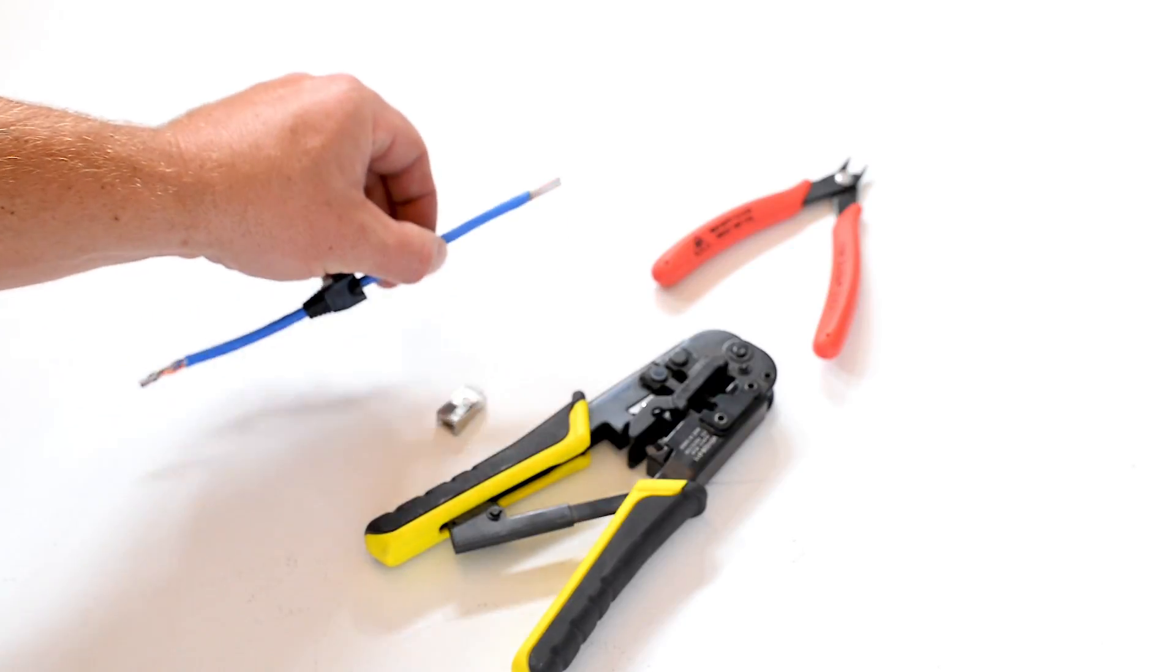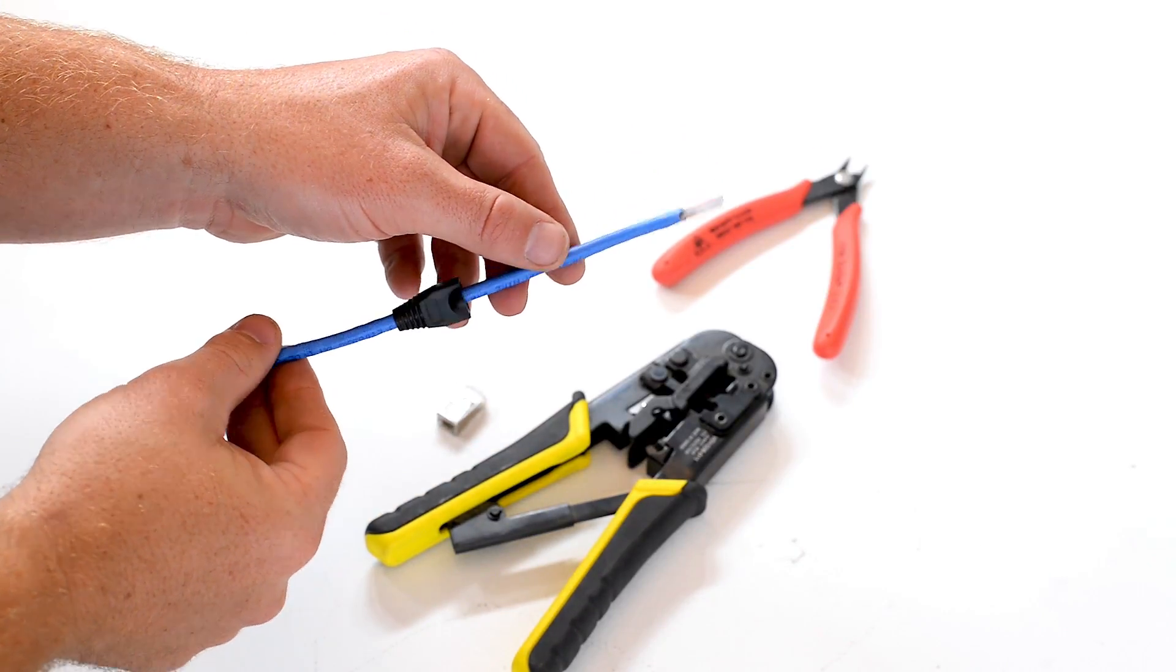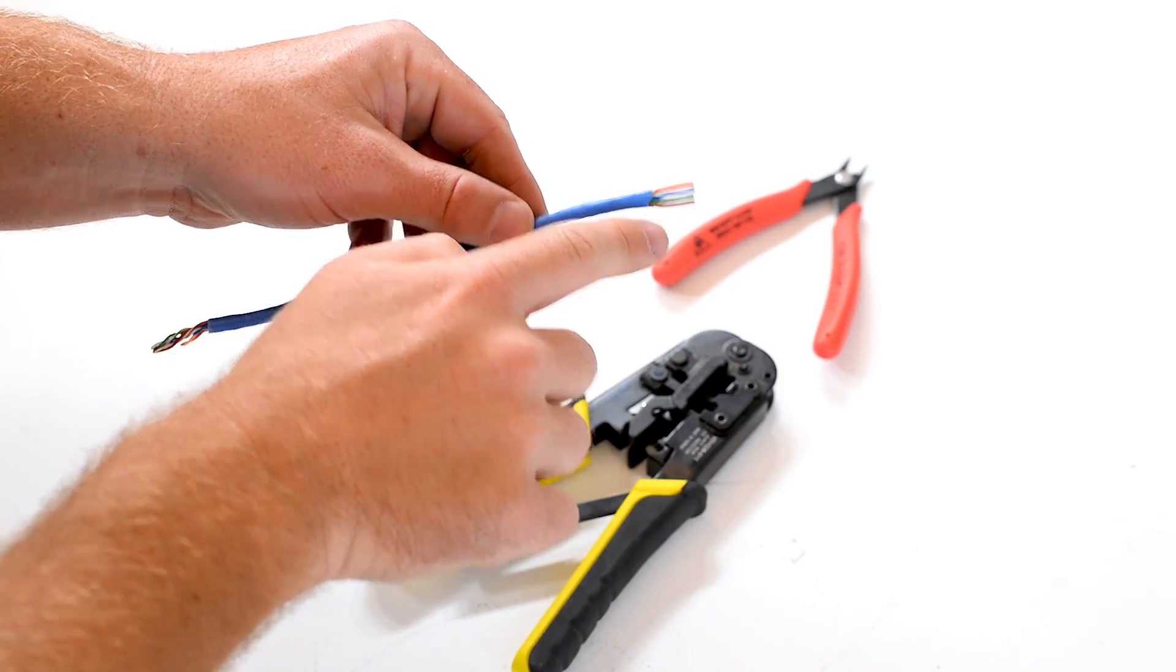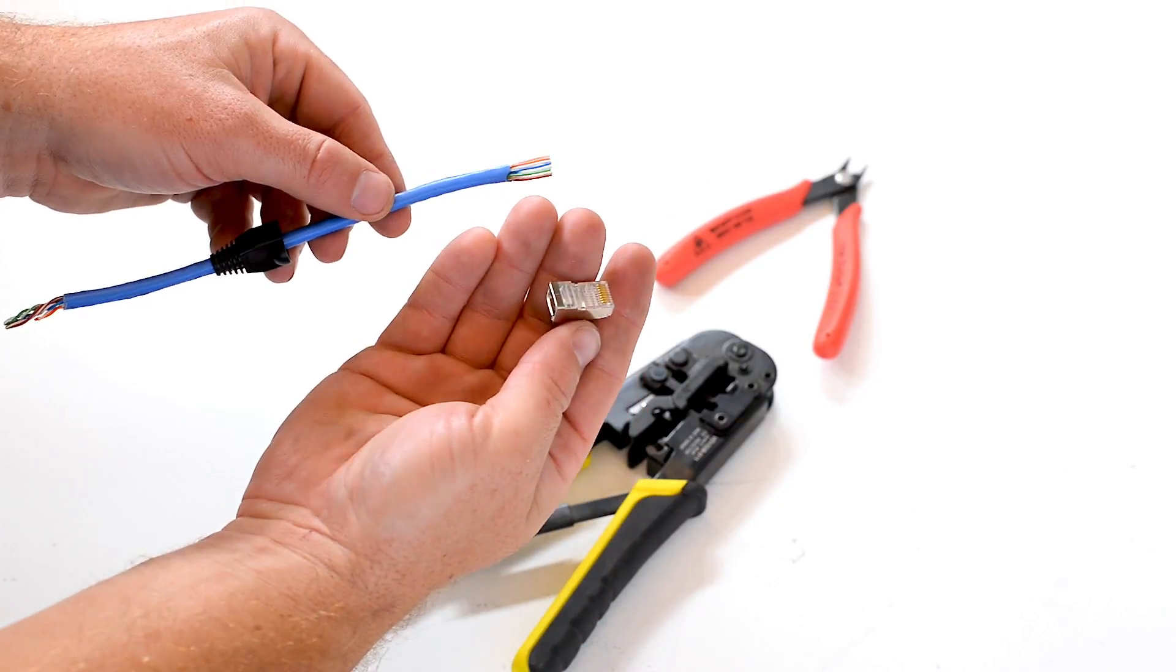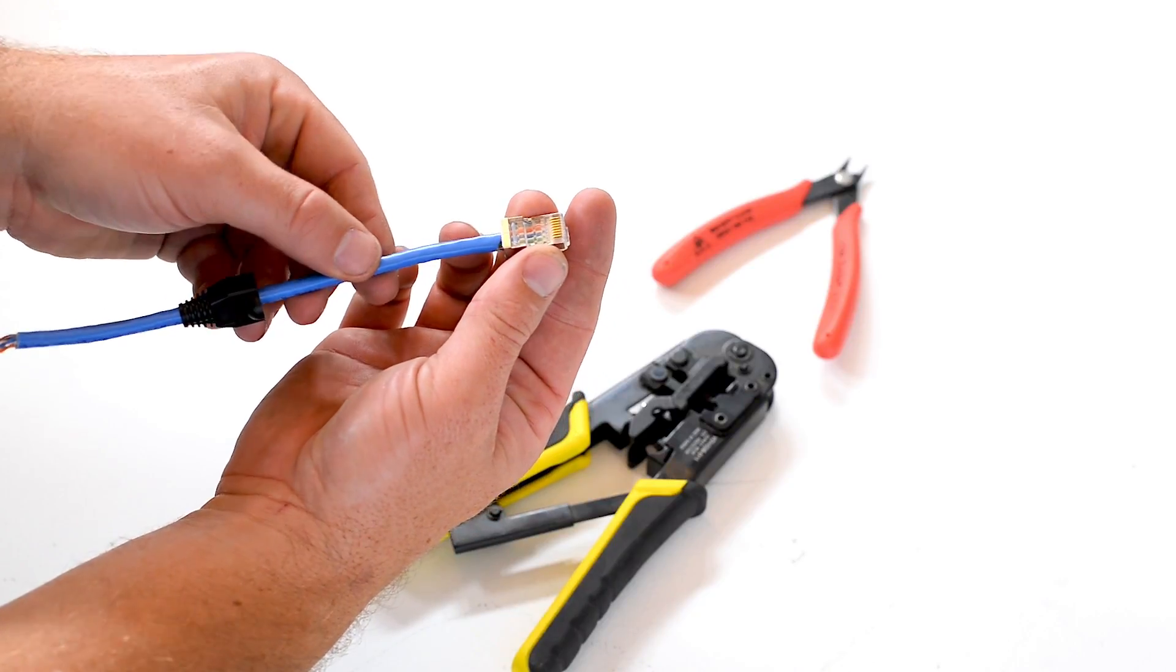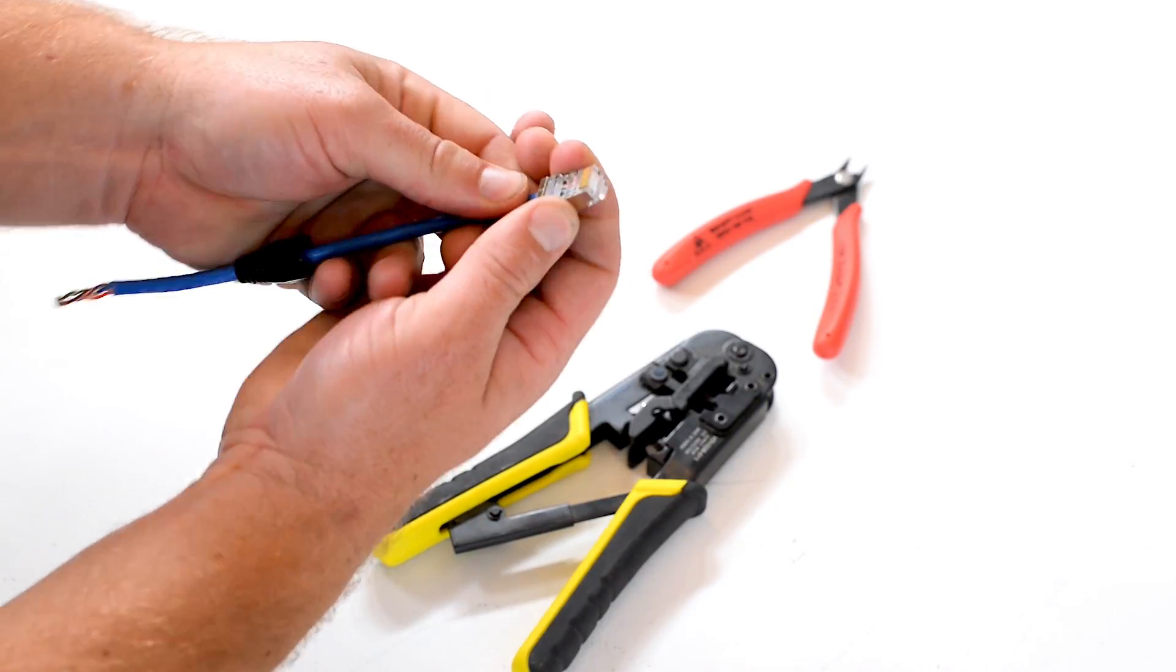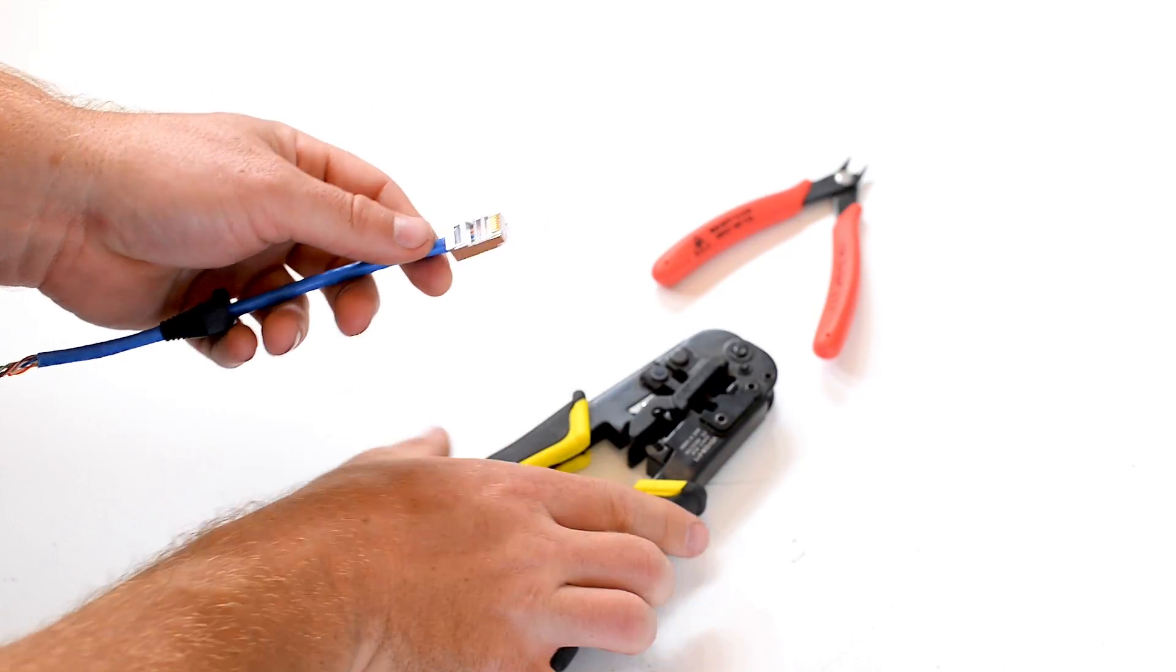So once we have cut our network cables and we have a nice clean edge and we have made sure that the boot is actually on the cable. You can see here I have got that nice clean edge and the order of my conductors is correct. I am going to take my RJ45 connector and I am going to very carefully slide in my cable. Making sure that the gold pins are faced up and the orange conductors are on the left side.